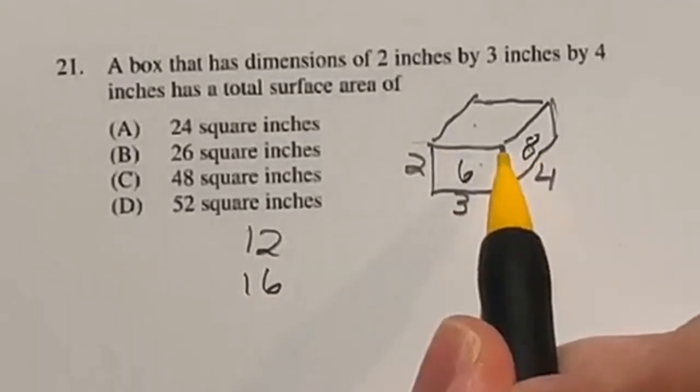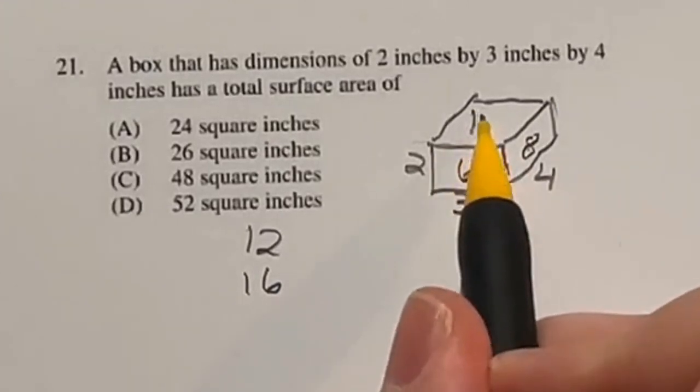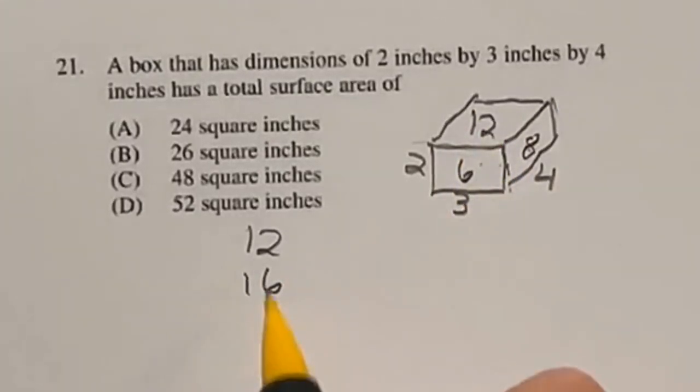And last but not least, we have the 4 by 3, which is 12, and we have that on the top and bottom, so adding together to give me 24.